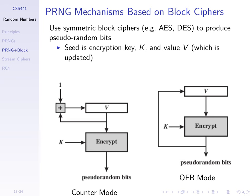The seed is made up of two values — the key and the initial value V — which must be chosen to get started. Then the algorithm keeps going forever, generating bits considered pseudo-random. This is good because we reuse existing ciphers that have been analyzed extensively and considered secure. We know they produce random outputs and have existing software and hardware implementations, making them practical to use.